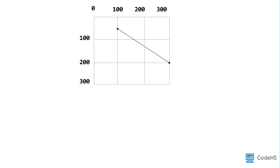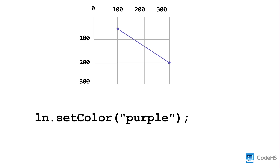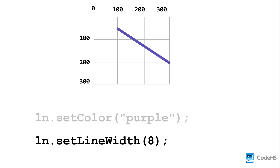We can customize the color and the thickness of a line. To customize the color, we write the name of the variable, dot, setColor, and between the parentheses, write a color string. To customize the thickness or width of the line, we write the name of the variable, dot, setLineWidth. Between the parentheses, pass the number of pixels thick that you want your line to be.